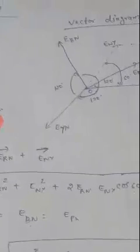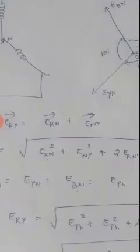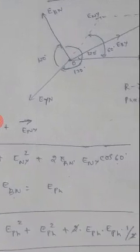Which says that resultant vector in case of law of parallelogram of force is equal to root of p² plus q² plus 2pq cos θ. Similarly here, E_RN² plus E_NY² plus 2·E_RN·E_NY·cos 60°.